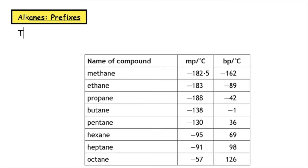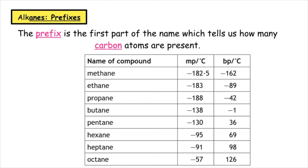The prefix is the first part of the name which tells us how many carbon atoms are present. If we use page 9, we can see that they all end in -ane and they've got a part of the word at the beginning, which is known as the prefix.